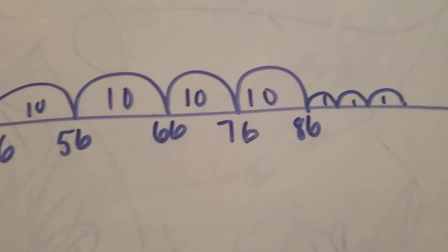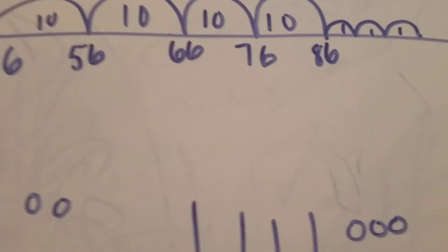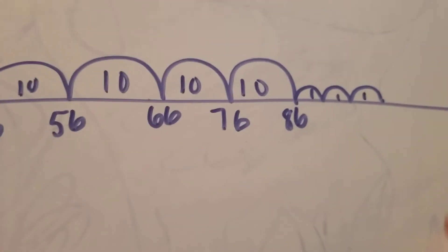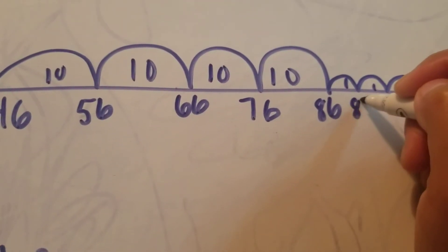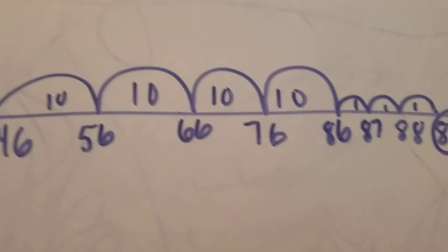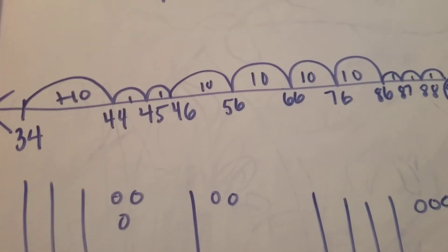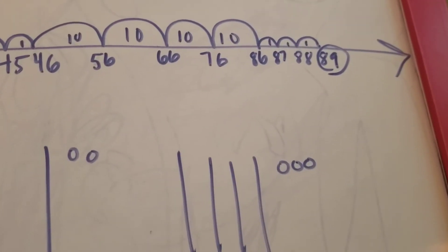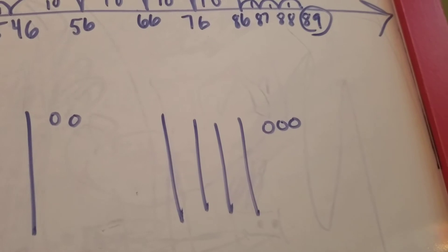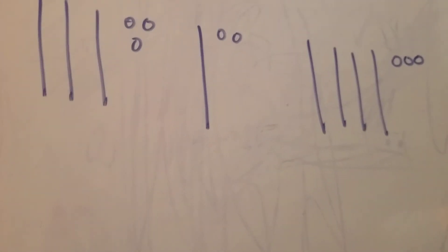Now all I have left to do is add my ones place. I was just at 86, so this is going to be 87, 88, and 89. So 89 is where I'm going to stop. 89 should be the answer if I work each strategy and I get the same answer every time.